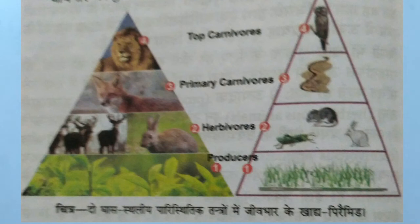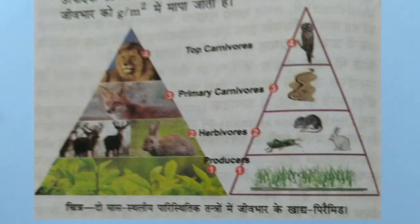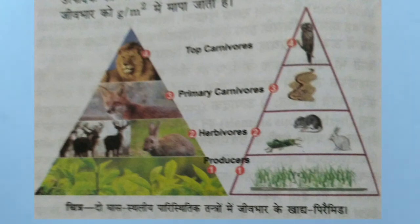Grass Land Ecosystem — Pyramid of Biomass. Biomass is measured as the fresh or dry weight of organisms at each trophic level. The biomass food pyramid for grassland and aquatic ecosystems is shown here.